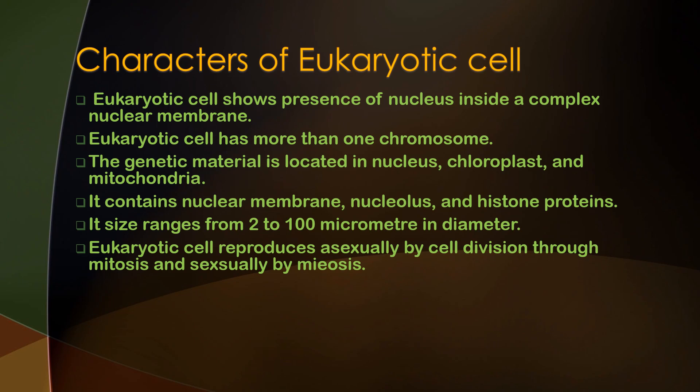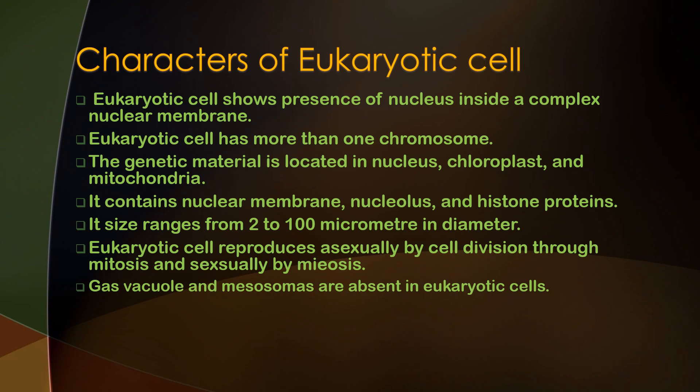The eukaryotic cell reproduces asexually by cell division through mitosis, and sexually by meiosis. Gas vacuoles and mesosomes are absent in eukaryotic cells; these structures are present in prokaryotic cells.